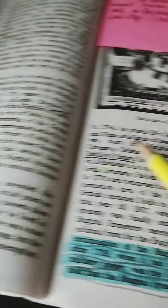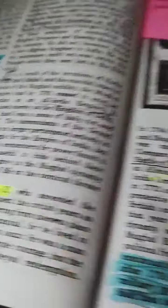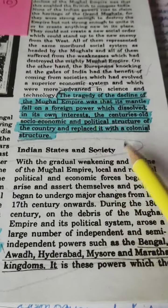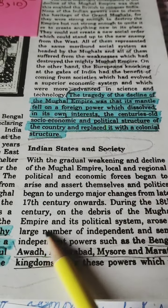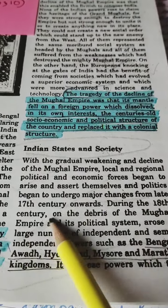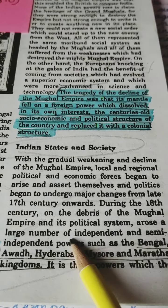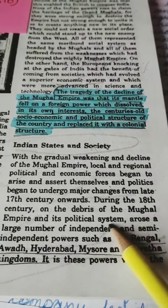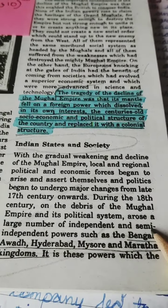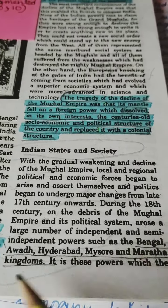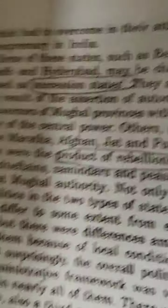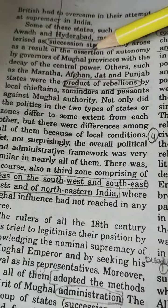When the Mughal era started breaking down — not completely, but after Shah Alam 2 — the political and economic system of the empire was deteriorating. There was a trend of a large number of independent and semi-independent powers such as Bengal, Awadh, Hyderabad, Mysore, and Maratha kingdoms, and it is these powers which may be characterized as succession states.